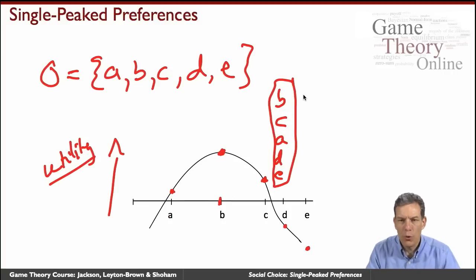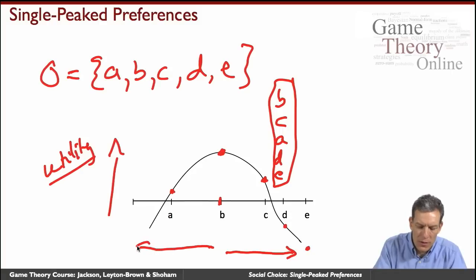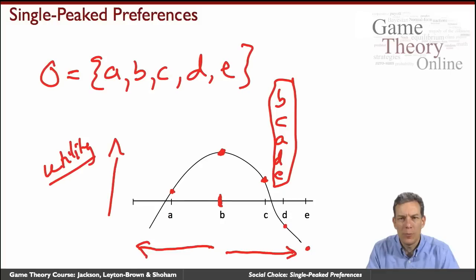But what's important in terms of single peakedness is that the further you move this way, the lower the preferences, the lower the utility is. So the voter always prefers something which is closer to B than something further away on the same side. And similarly, the more you move in this direction, the voter prefers the alternative B to A or anything further to the left of A. So that's what's known as a single peaked preference.